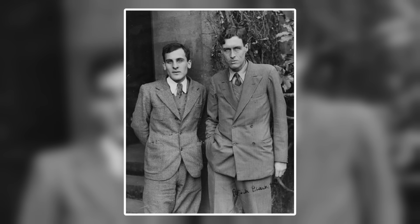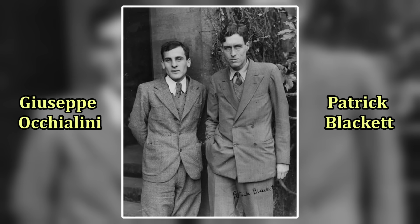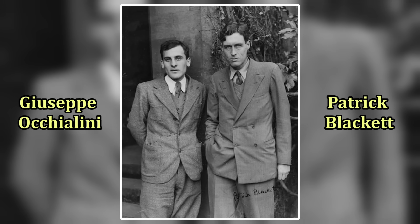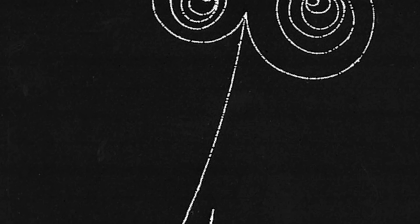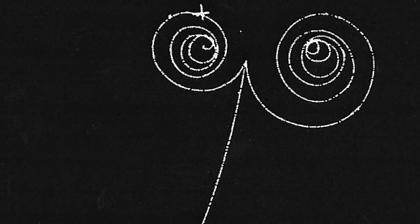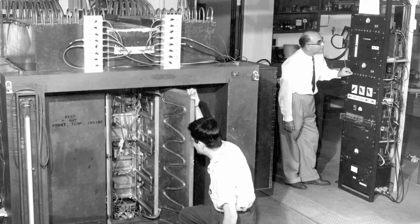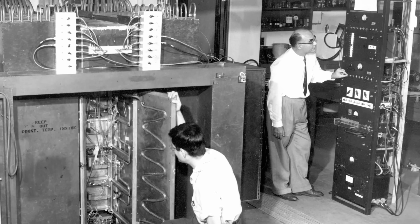The very next year, in 1933, English physicist Patrick Blackett and Italian physicist Giuseppe Occhialini, together at the University of Cambridge, further confirmed Anderson's discovery of the positron through their experiments with the cloud chamber. They found 14 indistinguishable tracks of the antiparticle in their experiments, and were also able to pick out electron-positron pairs spiraling in opposite directions, further supporting the pair production theory. By this point, the positron's existence seemed to be undisputable. The work done by Anderson had led to the very first known form of antimatter and confirmed the accuracy of Dirac's equation in full.